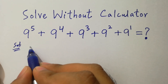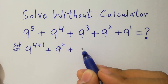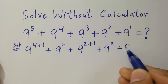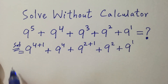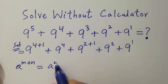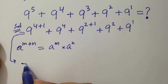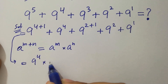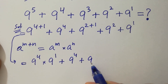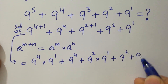Here, 9 to the power 5 is the same as 9 to the power 4 plus 1, plus 9 to the power 4 as it is, plus 9 to the power 3 which is the same as 2 plus 1, plus 9 to the power 2, and 9 to the power 1 as it is. Using the rule a to the power m plus n equals a to the power m times a to the power n, it becomes 9 to the power 4 times 9 to the power 1, plus 9 to the power 4, plus 9 to the power 4 times 9 to the power 2, times 9 to the power 1, plus 9 to the power 2, plus 9.